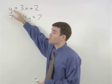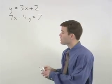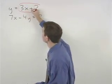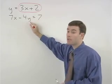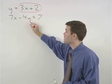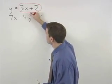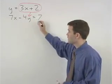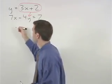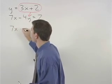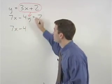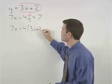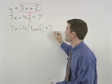In other words, since y means the same thing as 3x plus 2, we can replace the y in the second equation with a 3x plus 2. Our second equation then becomes 7x minus 4 times parentheses 3x plus 2 equals 7.